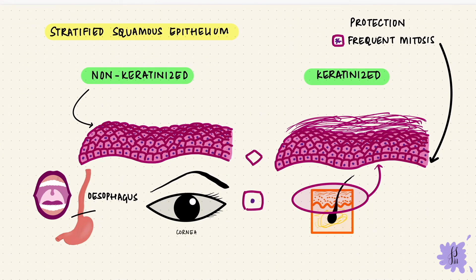Now we saw that the cells are getting flatter as we move towards the surface. But there's another type of epithelium where that doesn't happen. And that is called transitional epithelium. And it's what lines the bladder. So it's also called urothelium.